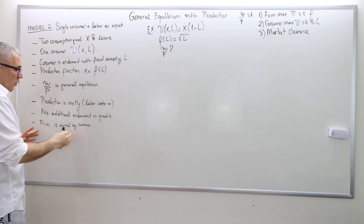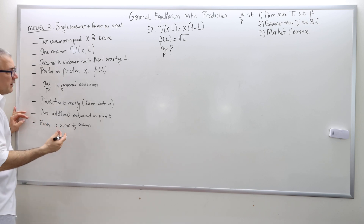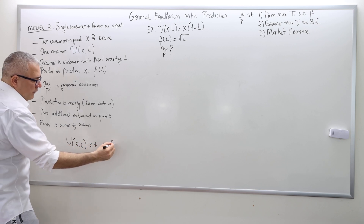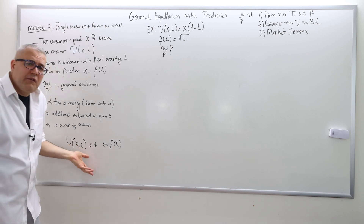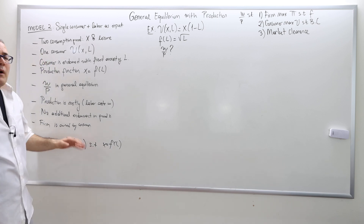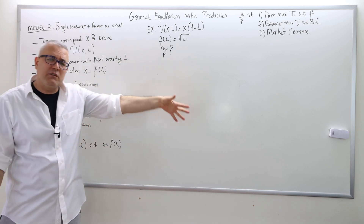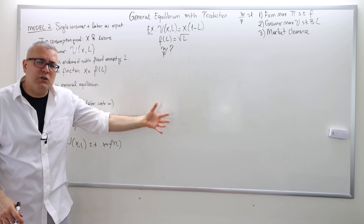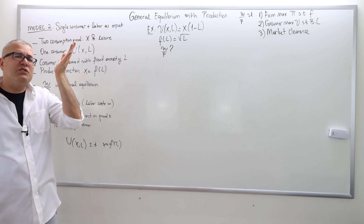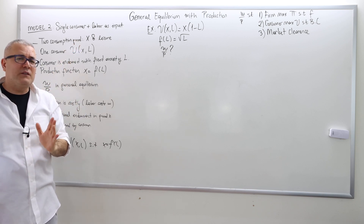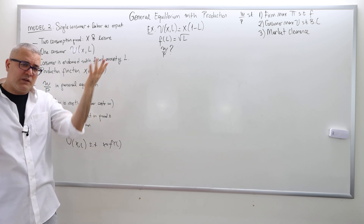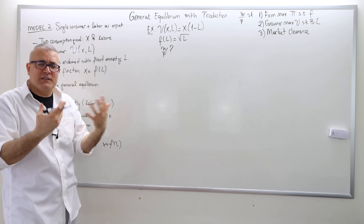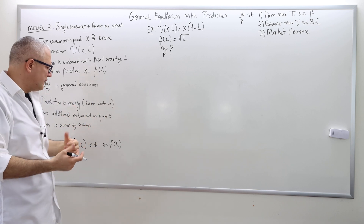The firm is owned by the consumer. So the consumer's problem is normally: maximize utility of X and L subject to X equals F(L). But we're not solving this problem directly. We are solving the general equilibrium problem, which would mean the same thing. But we are trying to find the general equilibrium solution — meaning we need to find the general equilibrium price ratio.